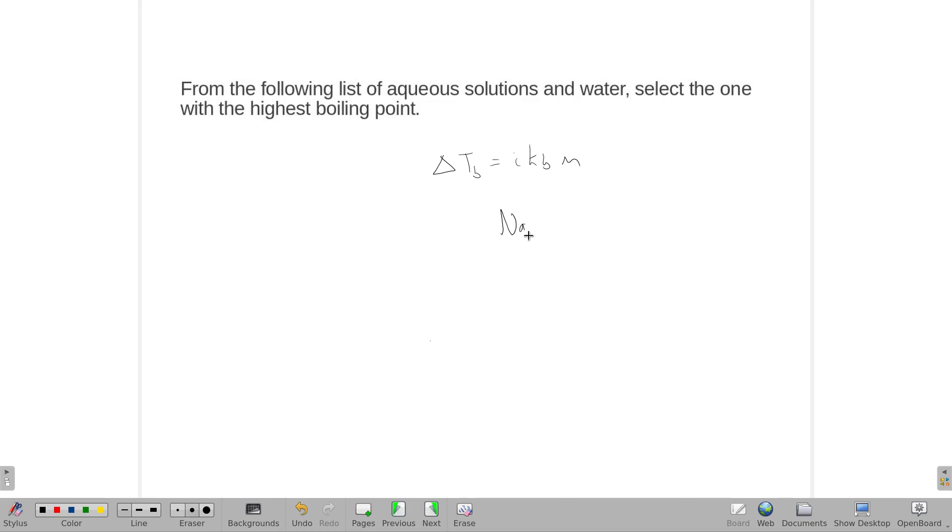What I mean by that, if I were to give you NaCl and say it was two molar, but also say two molar sodium carbonate, the sodium carbonate would actually have a higher boiling point because it has an i approaching three, while this one only has an i of two.